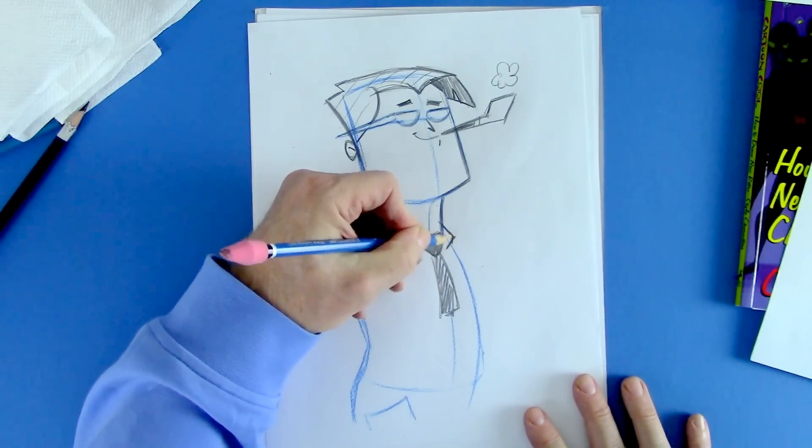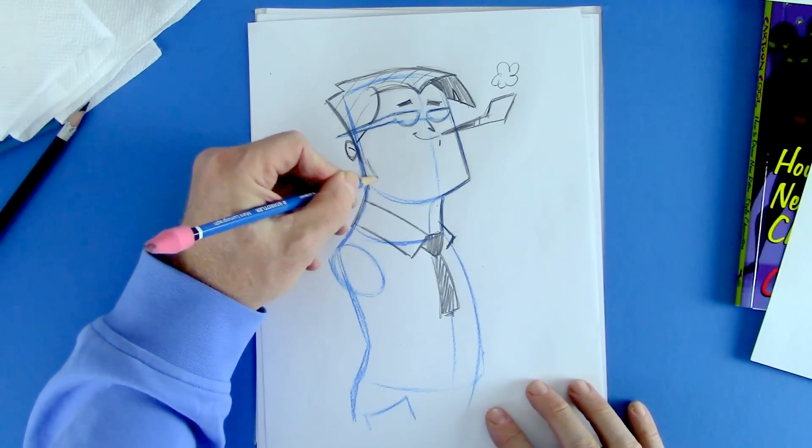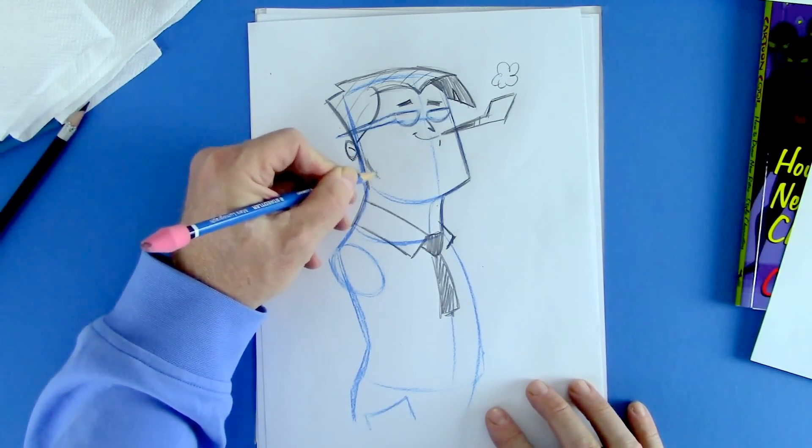All right, let's see. All right, oh the dad needs a vest, right. I mean every dad needs a vest. Here we'll give a little line for his chin over here. Just a little line here. I mean for his jaw.